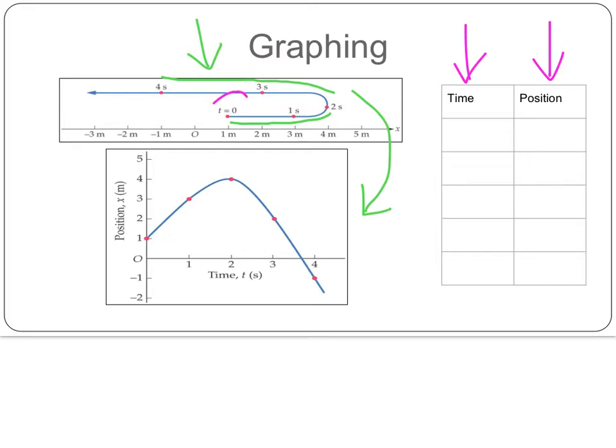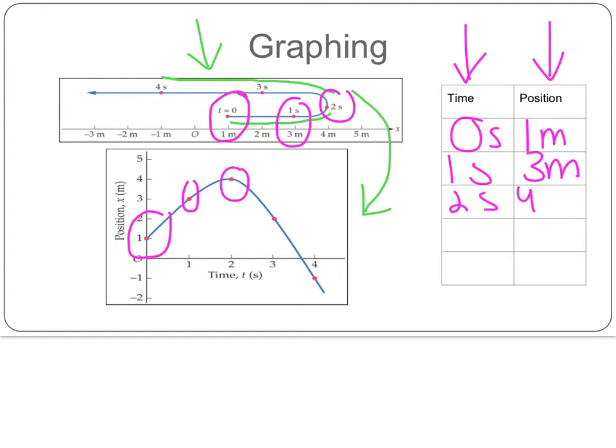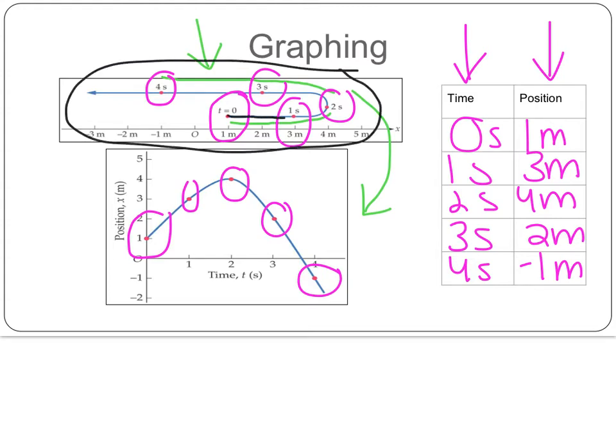So our first one, which is associated here, at a time of 0 seconds, we had a position of 1 meter. At 1 second, we had a position of 3 meters. At 2 seconds, a position of 4 meters. And then at 3 seconds, we had a position of 2 meters. Finally, at 4 seconds, we had a position of negative 1 meters. So we'll see up at the top that this graph shows our motion. This person is going from 1 meter to 4 and going all the way back around. Our graph looks a little bit different, so let's explore this.